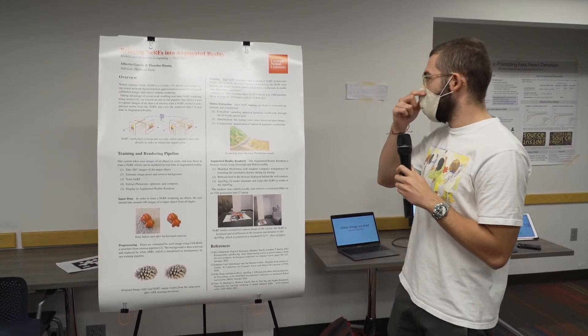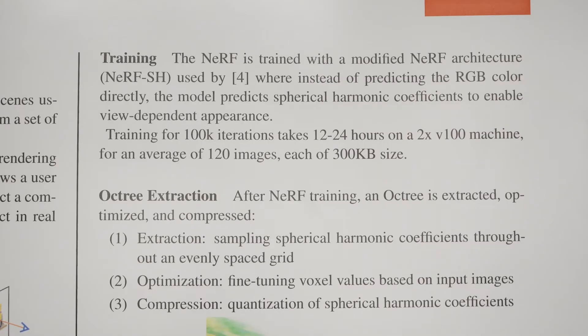Moving on to the training: instead of predicting the RGB color, we were predicting the spherical harmonic coefficients to enable view-dependent appearance. In our experiments, we run 100K iterations in total, and it took between 12 and 24 hours on two V100 machines, using an average of 120 images, each of 300 kilobytes in size.